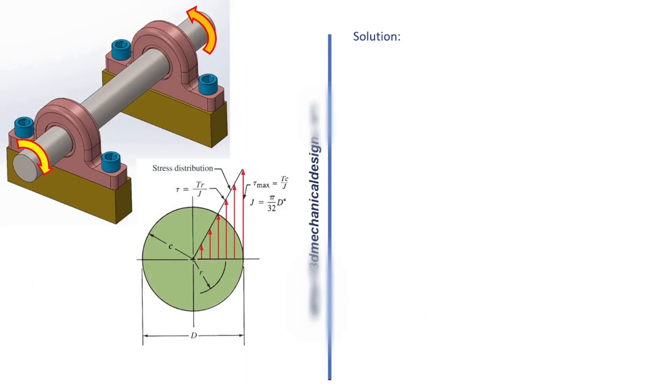Solution. Using J, the polar moment of inertia for the shaft: J equals π times D to the fourth power divided by 32. J equals 3.14 times 50 to the fourth power divided by 32. J equals 613,281.3 millimeters to the fourth power.